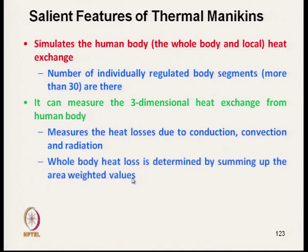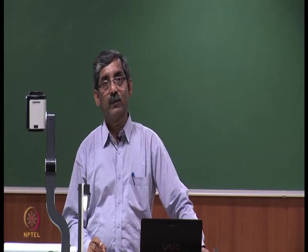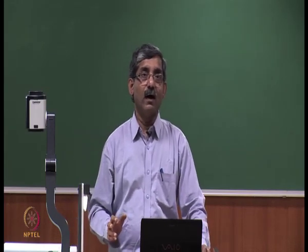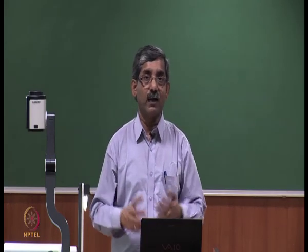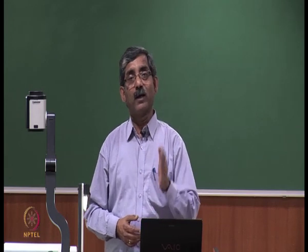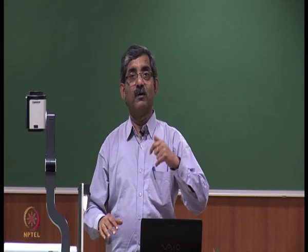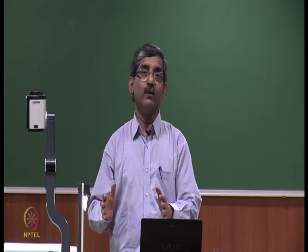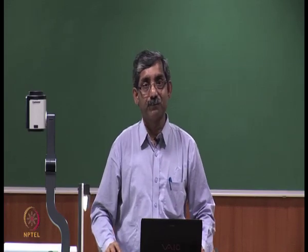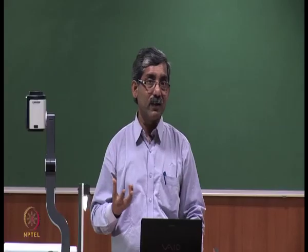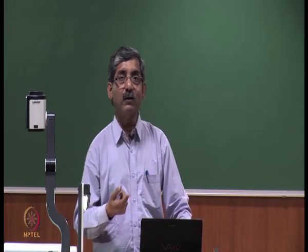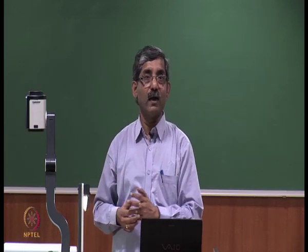The thermal manikin measures heat transmission in three-dimensional mode. It measures the heat loss due to conduction, convection, and radiation, which simulates the actual heat transmission condition through the human body. Manikins are of different types — walking manikins, stationary sitting manikins, and standing manikins — and can be placed at different climatic conditions. Whole body heat loss is determined by summing up area-weighted values from different segments and sensors.